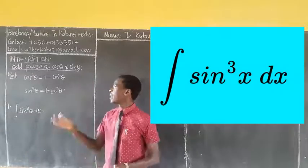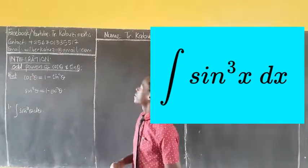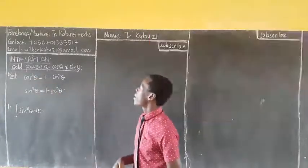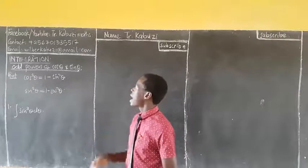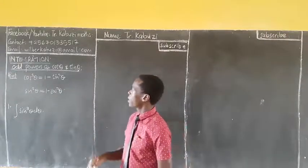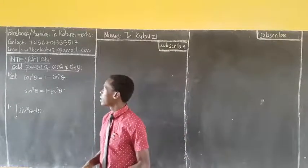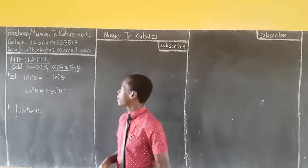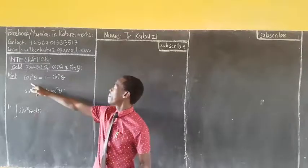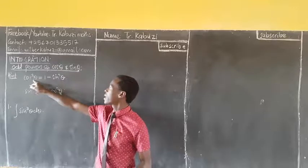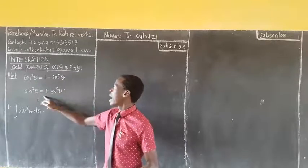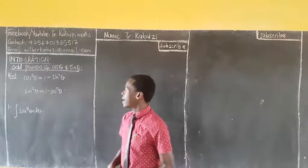Members, today we are going to see how we differentiate and how we interpret all the powers of sine and cosine. Now, you know that cos²θ + sin²θ = 1. If I make cos²θ the subject, I get one expression. And if I make sin²θ the subject, I get another.